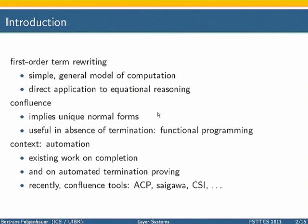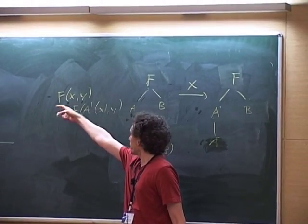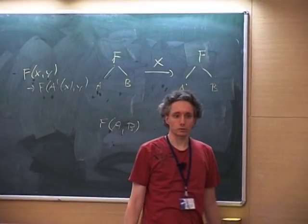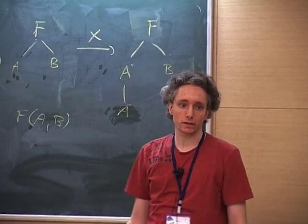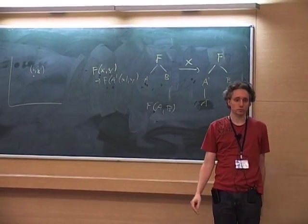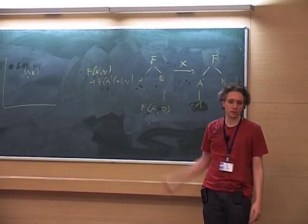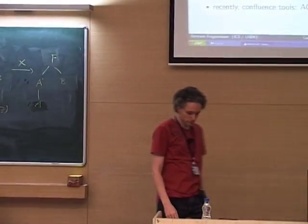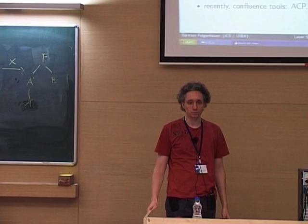The first order aspect is that we allow variables and rules, that is we could have a rule that rewrites f of x and y, where x and y are placeholders for arbitrary subtrees, and that could be rewritten to f of a prime of x and y.